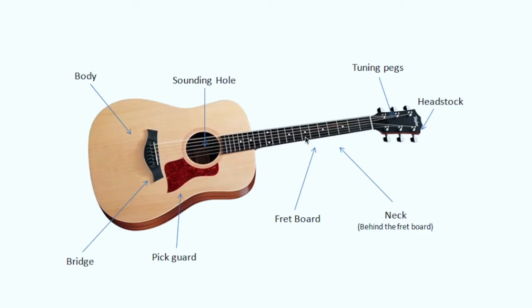The second part of the guitar is the neck. This complete part is known as the neck of the guitar, but the front part is known as the fretboard — a board which has frets. Usually we have 21, 22, or 24 frets; there are guitars with more than 24 frets, but that usually happens in the case of electric guitars.